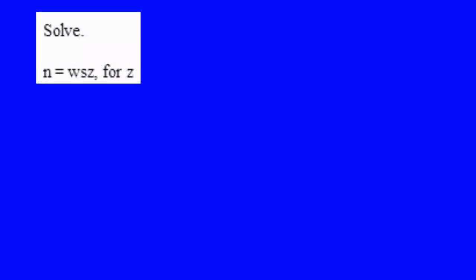There are many times in the sciences when it's desirable to not use numbers, but instead treat one variable as though it were x and the other variables as though they were numbers. That's what we're going to do now. z is acting like x. We're going to solve for z and treat n, w, and s as though they were numbers.